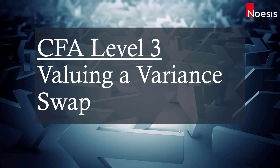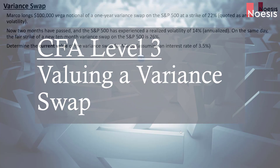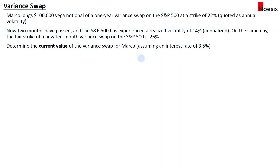In this video, we will look at an example on valuing a variance swap and calculating the settlement amount at expiration. So let's say Marco longs a $100,000 vega notional of a one-year variance swap on the S&P 500 at a strike of 22% quoted as annual volatility.